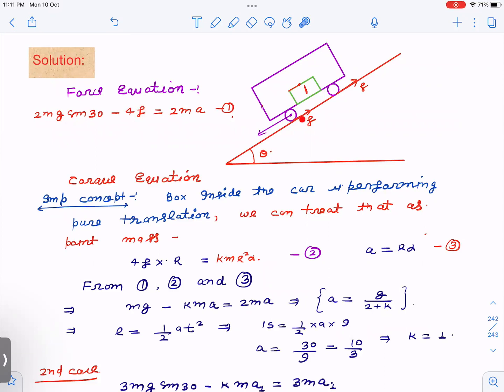Now, in the torque equation, there is a very important concept which I've written here: the box inside the cart is performing pure translation. We can treat that as a point mass at center. Why? Because if you imagine any line here, and after some time what will happen - this cart will come here.